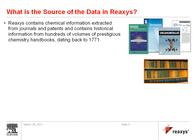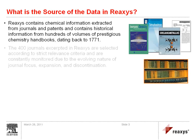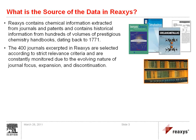The 400 journals excerpted in ReAxis are selected according to strict relevance criteria and are constantly monitored due to the evolving nature of journal focus, expansion, and discontinuation.